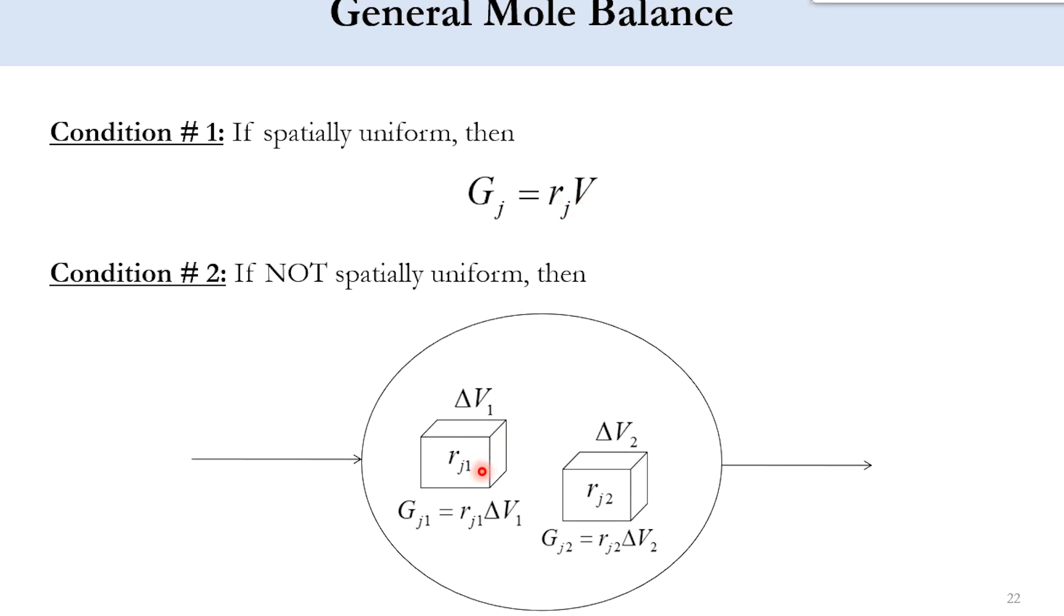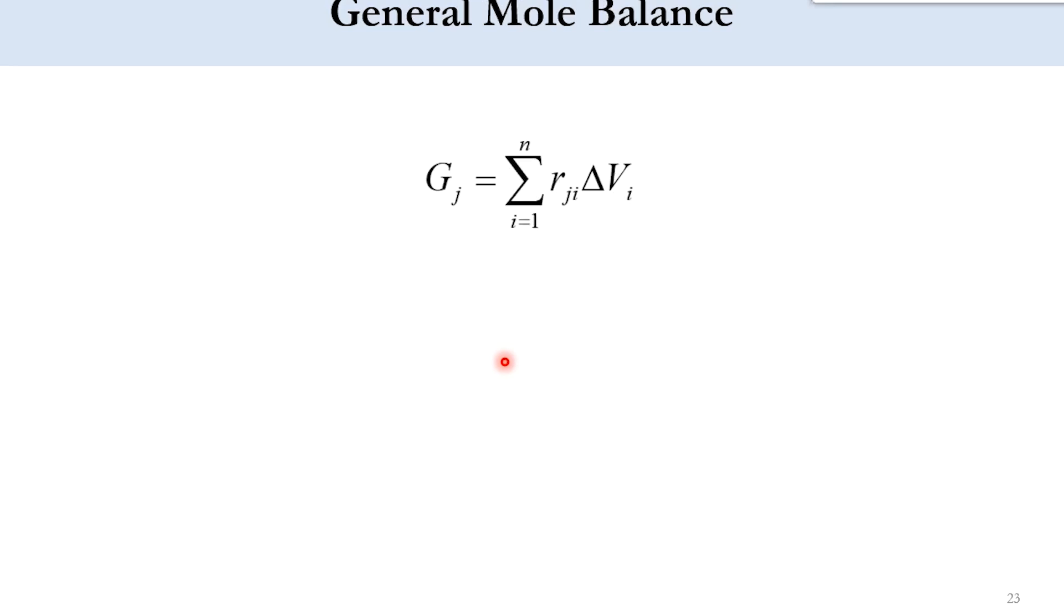But if it is not spatially uniform, like you can see here that at 0.1 like delta v1, the rate of reaction is r_j1. At 0.2 the rate of reaction is r_j2. So accordingly the generation is equal to rate multiplied by that volume of the segment. So accordingly g_j is equal to summation i equals 1 to n r_ji delta v_i, where i represents from 1 to n which represents the compartments or the distribution.